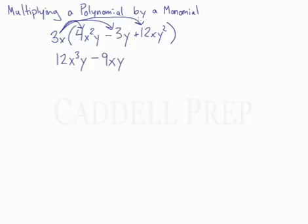And now we'll distribute this to the last term, so we have 3 times 12, positive 36, so plus 36. x times x, x², and then we have y².